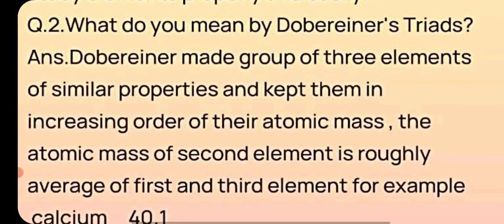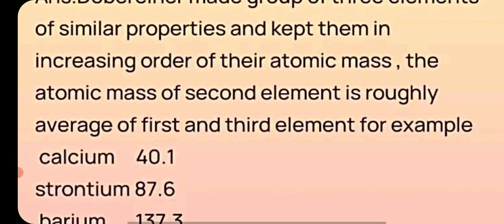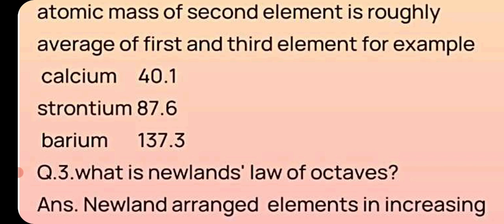Question number 2: What do you mean by Dobereiner's Triads? Dobereiner made groups of three elements with similar properties and kept them in increasing order of their atomic mass. The atomic mass of the second element is roughly the average of the first and third elements — for example, calcium, strontium, and barium. If you add the atomic masses of calcium and barium, you get roughly the atomic mass of strontium. But the limitation was that he could not form more than three triads.